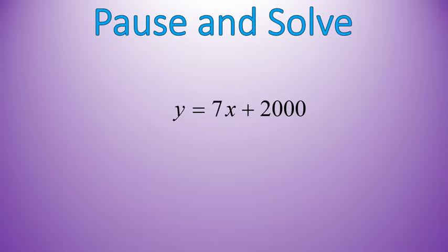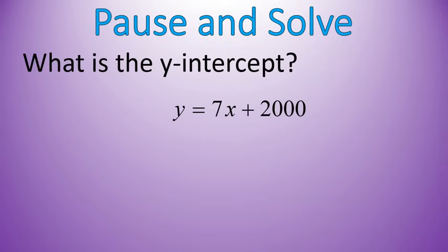Last question. I want you to pause and solve it. Where is the y-intercept of this equation? Where does it cross the y-axis? Hey, welcome back. Did you get 2,000? That's exactly it. The slope of this line is 7. The y-intercept is 2,000. That's right.